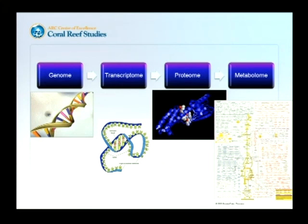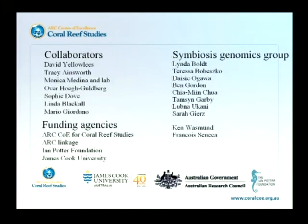Finally, where we're going now with this work is further characterising the transcriptome, but also looking further downstream — we're establishing collaborations with AIMS and some groups in Italy to start looking at the metabolome. So to actually start measuring the concentration of these different metabolites and using them as an indication of how our symbiosis is changing, and linking that to our transcriptomic responses. There have been a number of people involved in this: Dave Yellowlees, Tracy, Monica Medina's group, Ove and Sophie — where the EST sequencing really started — Linda Blackall, and Mario Giordano, who will be involved in the metabolome work.